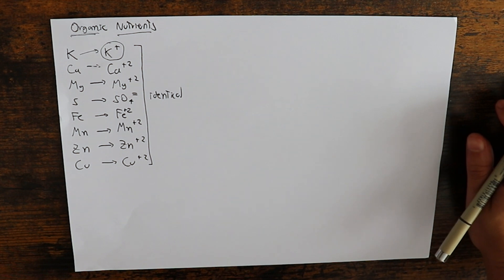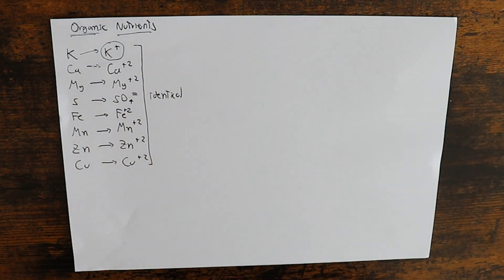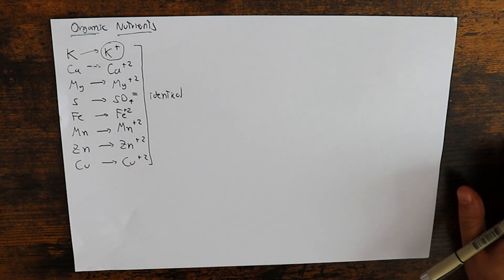These are mainly mostly cations, we have an anion there, the sulfate, but these are we could say for the most part identical in both cases whether the nutrient is organic or whether it is mineral. These ions will be the exact same thing. So is there any difference then? You've noticed that some important nutrients are missing here and this is because for some nutrients there are very important differences.